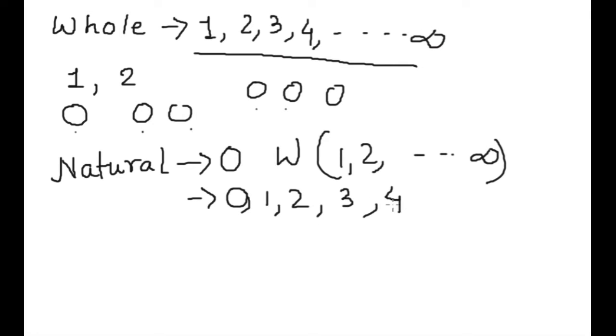3. It is called natural numbers. If zero is there then it will be natural number. If zero is not there then it is whole number.